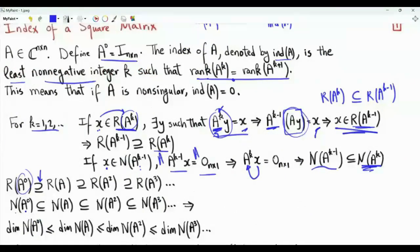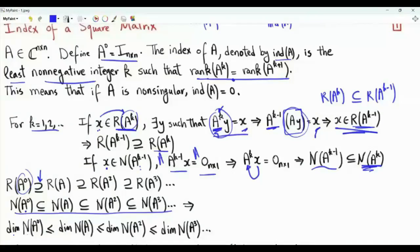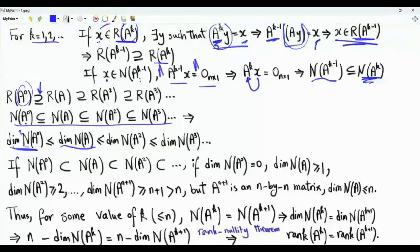The null space of the identity, which is just the all-zero vector, is a subset of the null space of A to the power 1, which is a subset of the null space of A squared, which is a subset of the null space of A cubed, and so forth. The null space remains the same or grows as we raise A to successively higher powers. If we have this inclusion, then the dimension of the null space of A to the 0 is 0, and dimensions are less than or equal to each successive power.